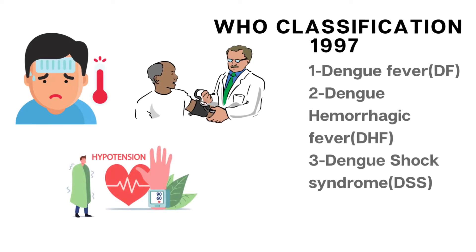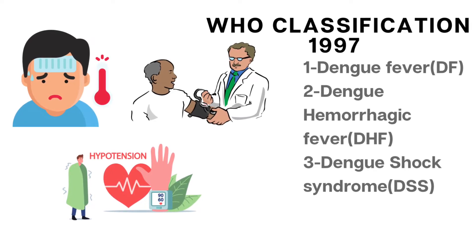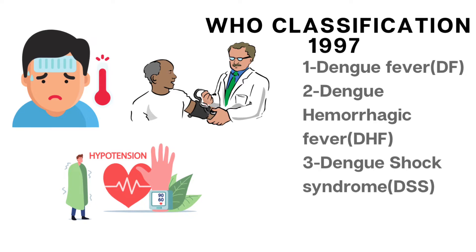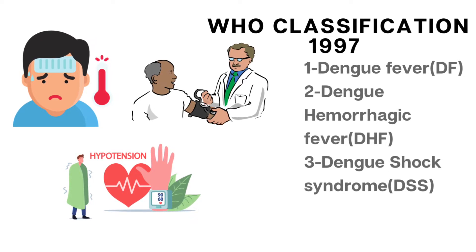In 1997, the World Health Organization published a classification scheme describing three categories of symptomatic dengue virus infection: dengue fever, dengue hemorrhagic fever, and dengue shock syndrome.